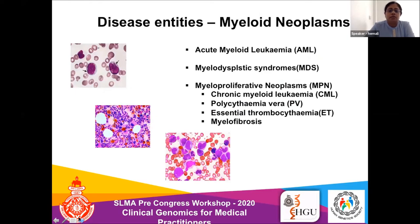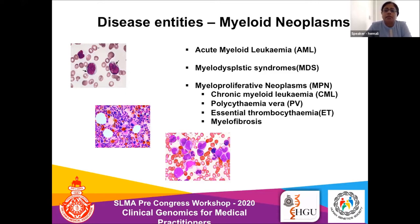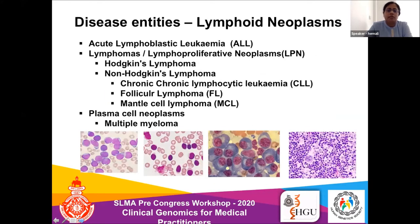The disease entities include myeloid neoplasms — acute myeloid leukemia, myelodysplastic syndromes, and myeloproliferative neoplasms such as chronic myeloid leukemia, polycythemia vera, essential thrombocythemia, and myelofibrosis. Then there are lymphoid neoplasms — acute lymphoblastic leukemia, Hodgkin's and non-Hodgkin's lymphomas — and plasma cell neoplasms including multiple myeloma and monoclonal gammopathy. The spectrum of clinical entities is very wide.